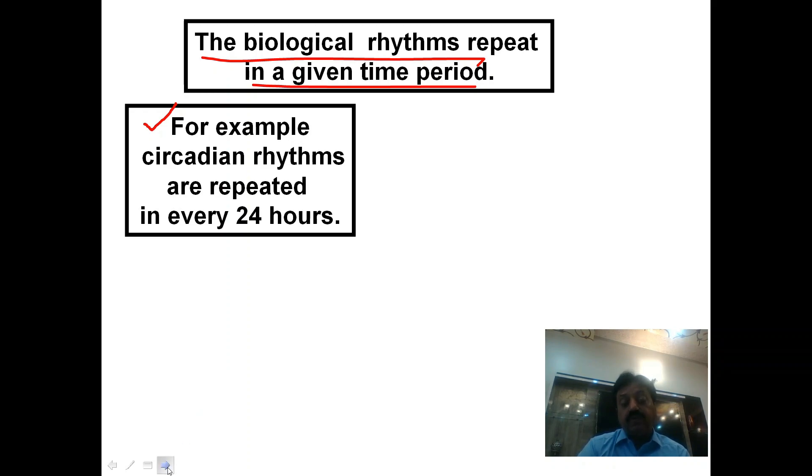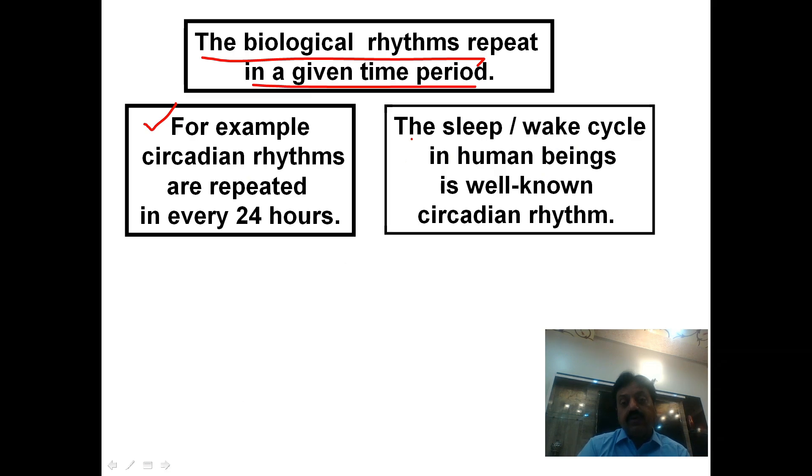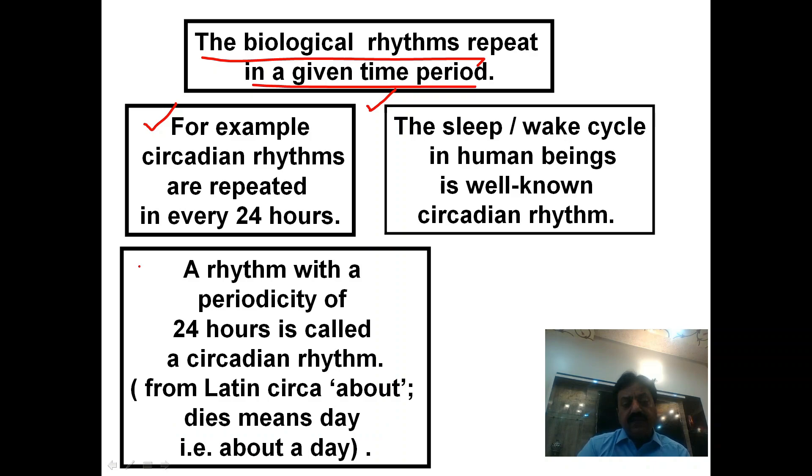For example, circadian rhythms are repeated in 24 hours. The sleep-wake cycle in human beings is a well-known circadian rhythm. A rhythm with a periodicity of 24 hours is called a circadian rhythm. It comes from two Latin words: circa means about, and dies means a day, so circadian means about a day.